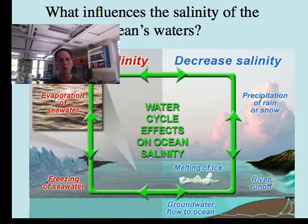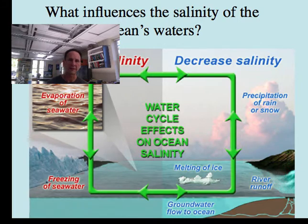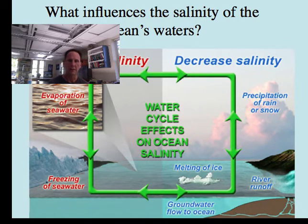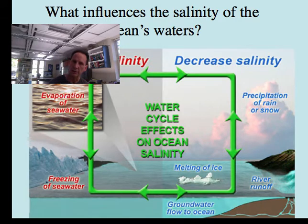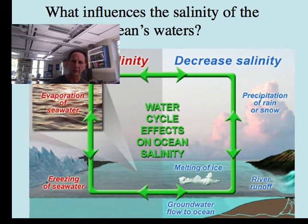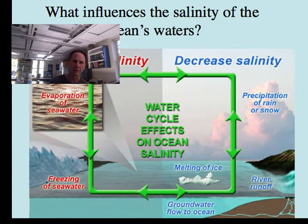Now let's look at what influences the salinity of the ocean's waters. On the left-hand side of this slide, the two things that increase salinity are the freezing of seawater and evaporation. On the right-hand side, we see the things that decrease salinity: precipitation (meaning rain or snow), the melting of ice, input from river runoff, and groundwater flowing into the ocean from beneath the surface. All of those things decrease salinity, while evaporation and freezing are the things that increase salinity.